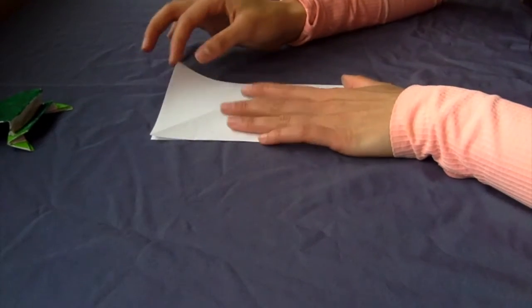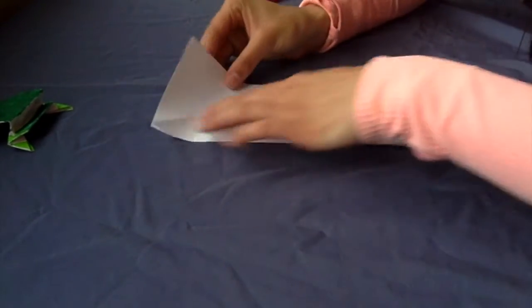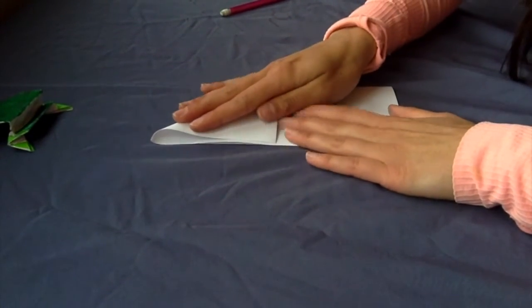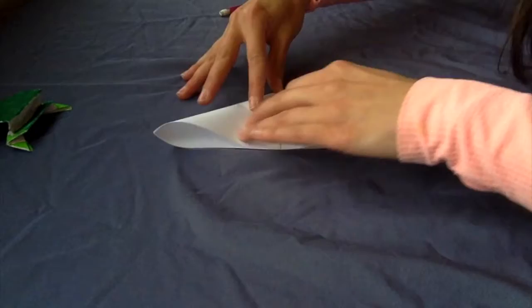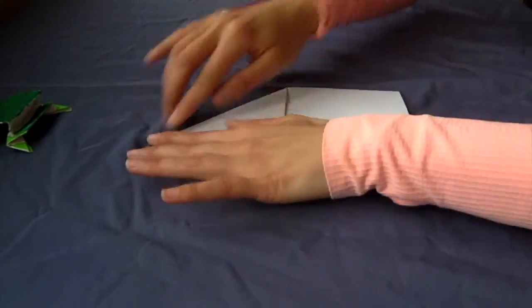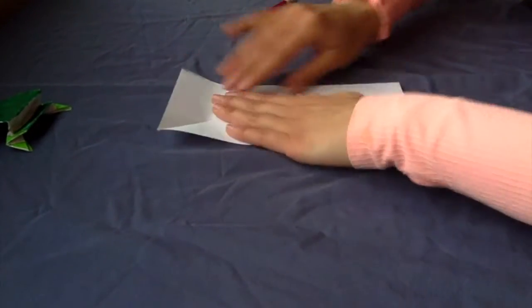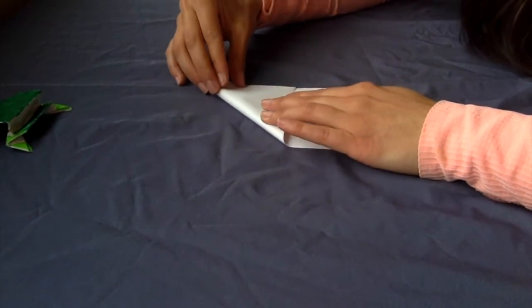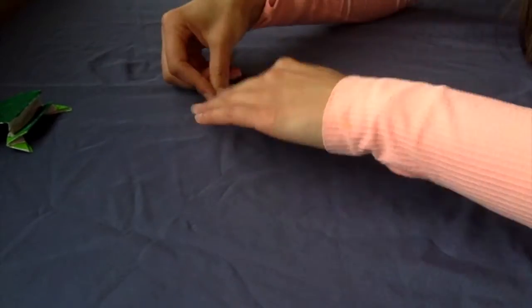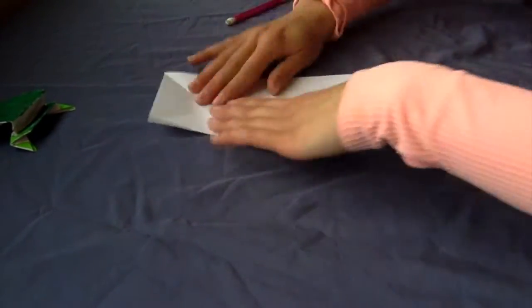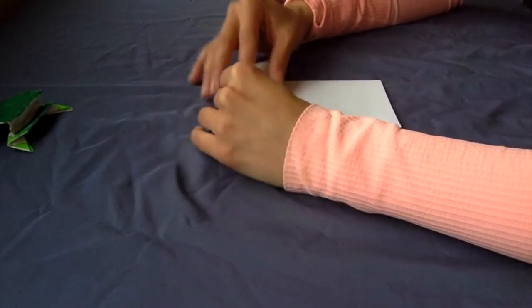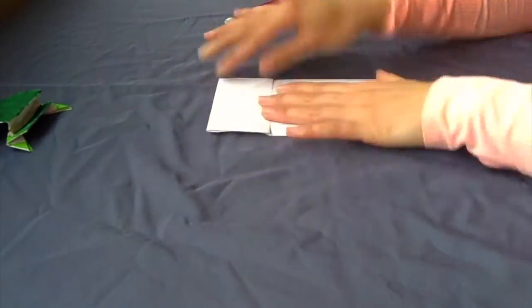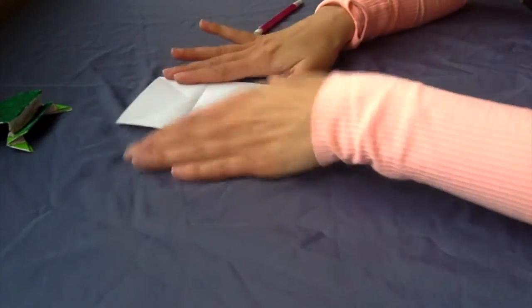So once you fold it in half, you're going to take this top corner and fold it in on itself. I'm going to unfold it and we're going to fold this corner down the other way. Next we're going to fold this in half, unfold it, and flip it over.